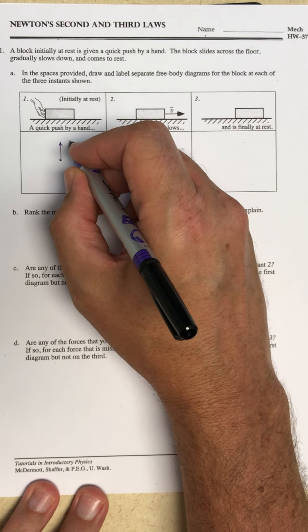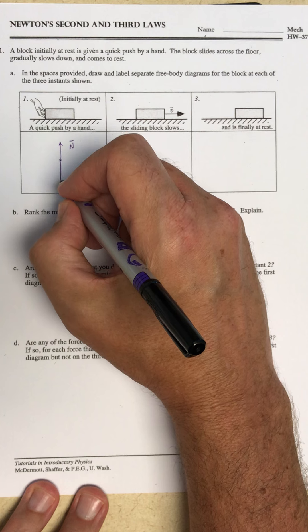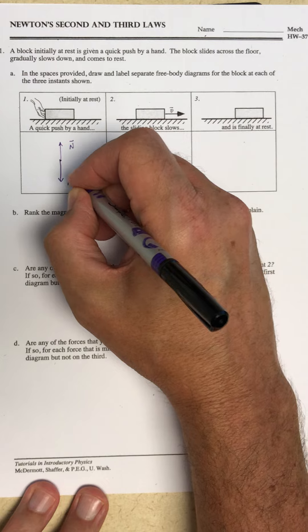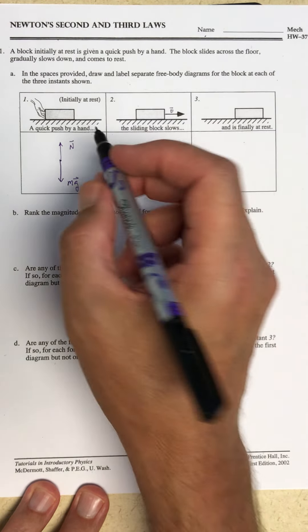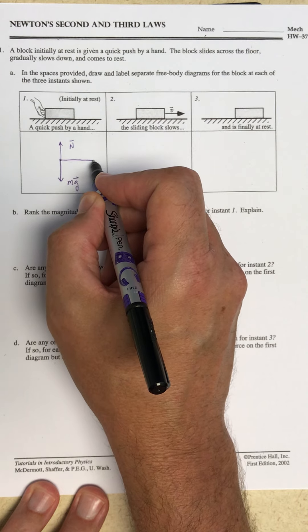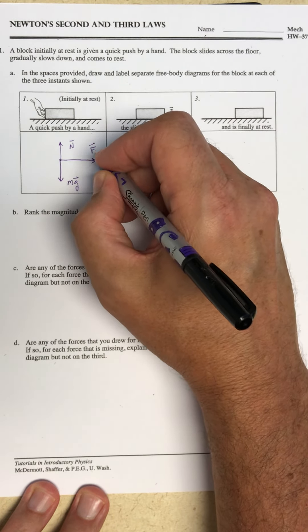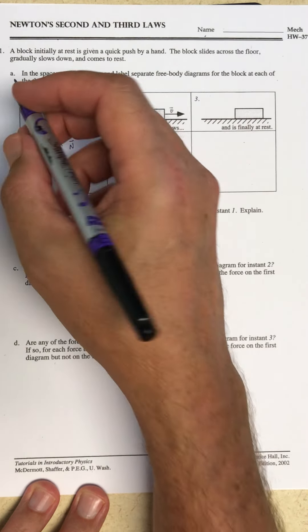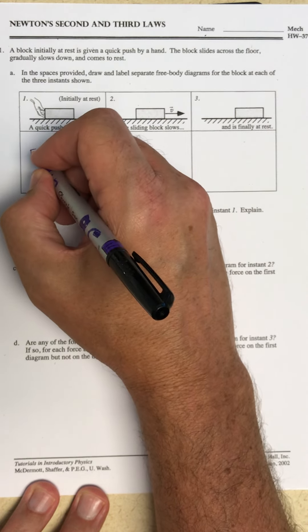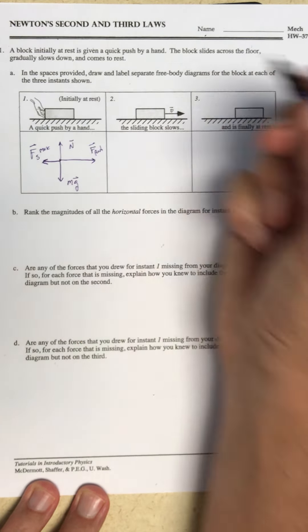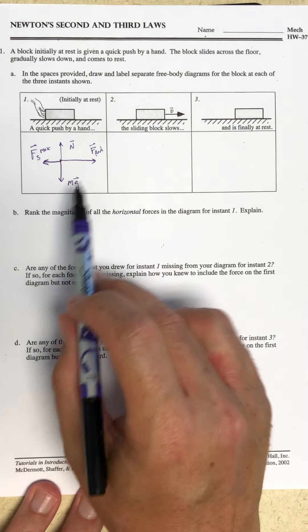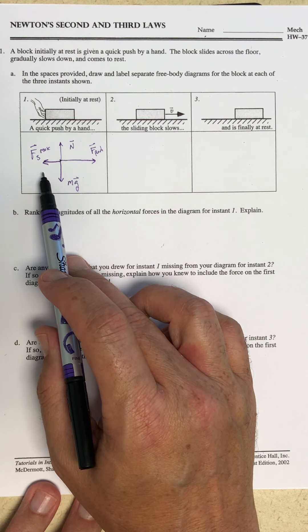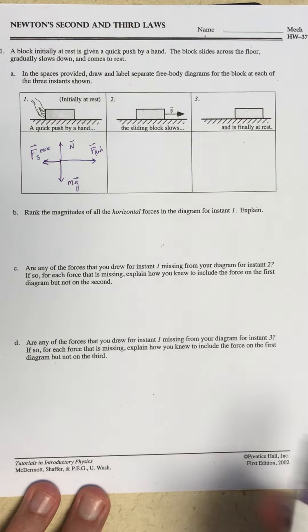I have a normal force since the block is not going through the floor, and the weight of the block is canceled out by the normal force. I'm giving it a quick push to the right, and that push has got to be big enough to overcome the maximum force of static friction to the left. I know that the push is bigger than that force of static friction — the largest the floor can provide on the block — because the block accelerates to the right.